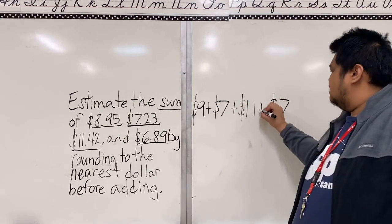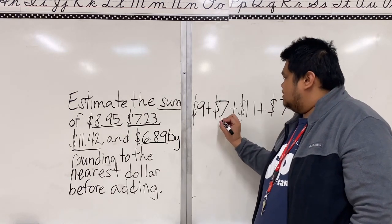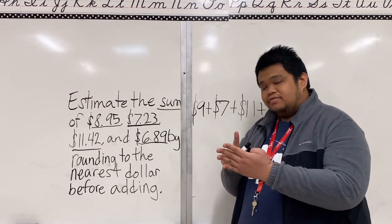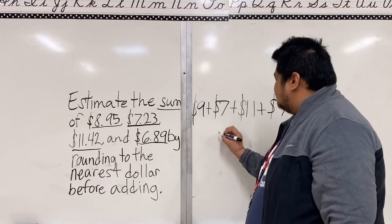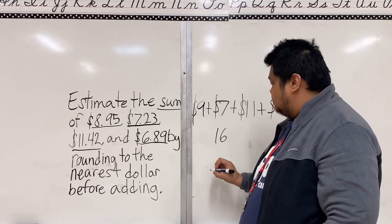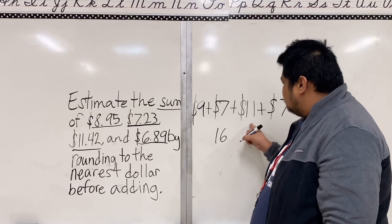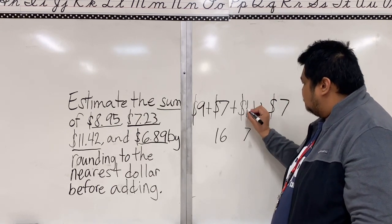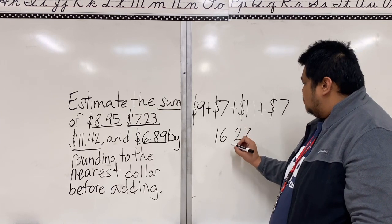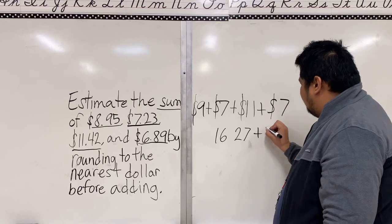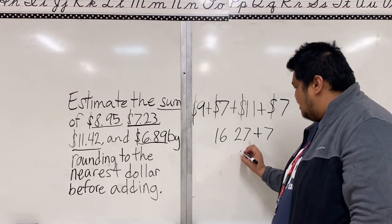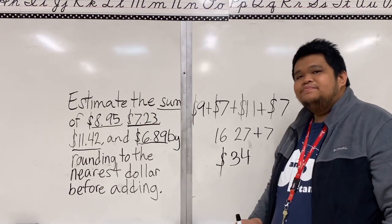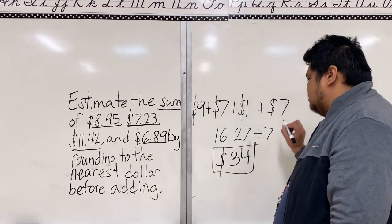Now let's solve this. 9 plus 7 - 9, 10, 11, 12, 13, 14, 15, 16. 16 plus 11, we will have 27. 27 plus 7, what is 27 plus 7? We will have 34. Is that our final answer? Yes, our final answer is 34. Any questions?